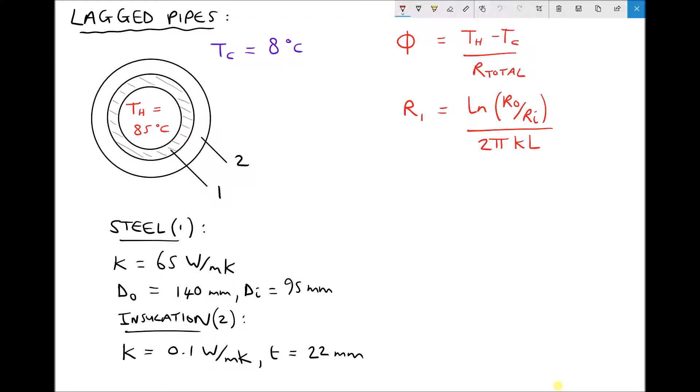In this first video we're only going to be considering the effects of conduction. In the next video we're also going to look at how we would apply the surface heat transfer coefficients as we did when we looked at composite walls. In the top right hand corner we have our formulas. The rate of heat transfer equals the hot temperature minus the cold temperature over the total thermal resistance. And we also have a formula for calculating the thermal resistance within cylinders or pipes. Now in this particular example I've not specified the length of the pipe, so instead we're going to be calculating the heat loss per meter of length.